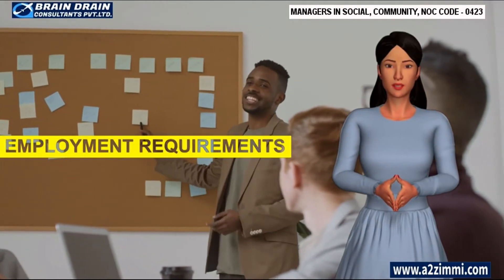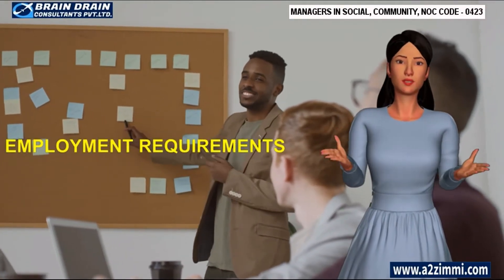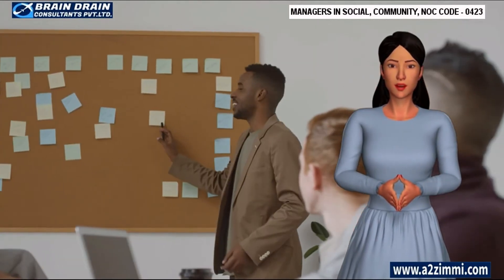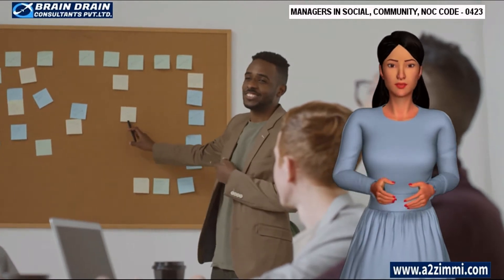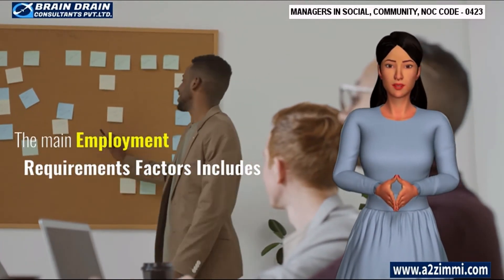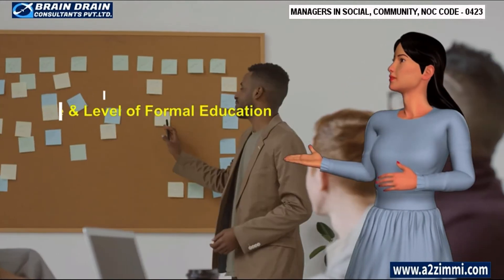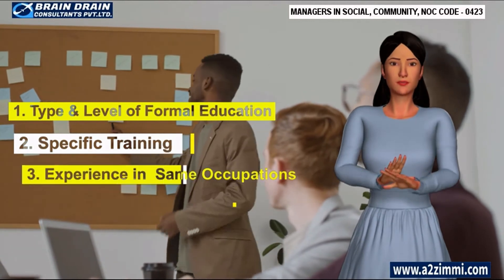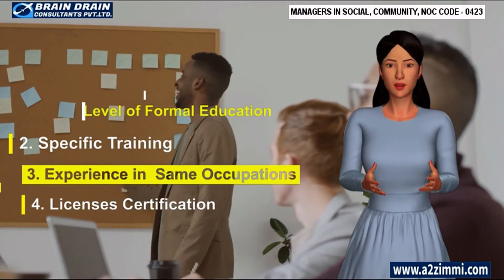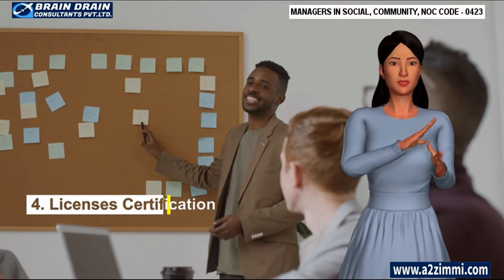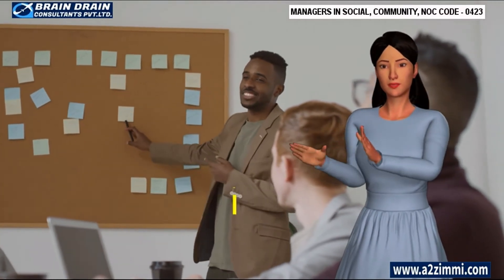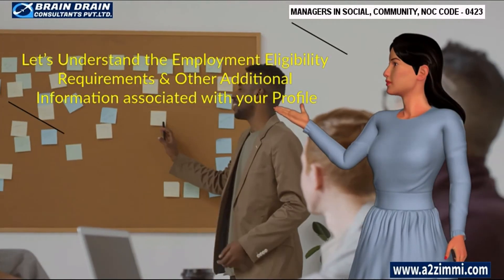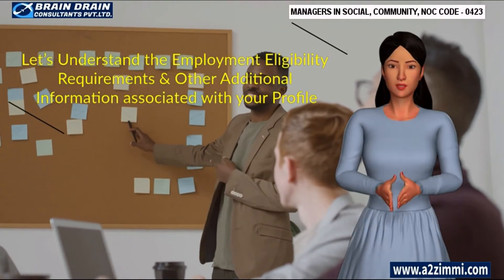Employment requirements and other additional information: every job has a specific set of employment requirements associated with it. The main employment requirements factors include: type and level of formal education; specific training or apprenticeship; experience in the same or other related occupations; licenses, certification and registration to practice in a regulated profession. Let's understand the employment eligibility requirements and other additional information associated with your profile.